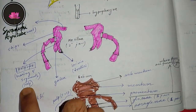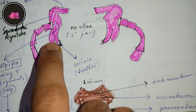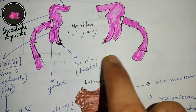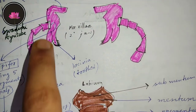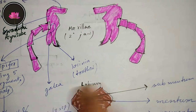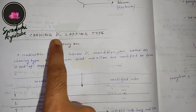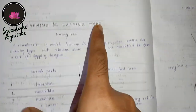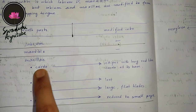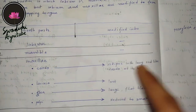Now remember, the parts of maxilla are: cardo, stipes, palpifer having a five-segmented palp, one inner-layer teeth called lacinia, and the outer layer galea. In chewing and lapping type of mouth parts, you can see that cardo and stipes actually change a little bit — they become long.